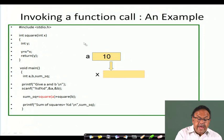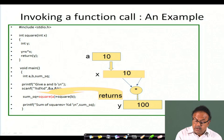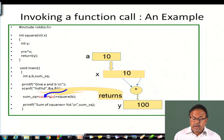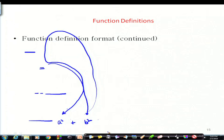We compute y which is 10 times 10, so y becomes 100. This 100 is returned to the calling point — it comes back here. Similarly for b: if b was 7, then x will get 7, y will be 49, and 49 comes back as square of b. So 100 plus 49 will be added and kept as the sum_of_square.